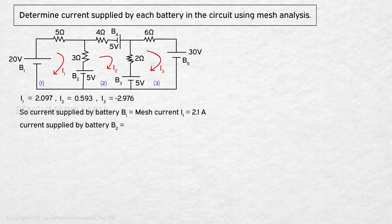Current supplied by battery B2 equal to difference of mesh current I1 and I2 since B2 is present between mesh 1 and mesh 2, which is equal to I1 minus I2 which is equal to 2.097 minus 0.593 which will give you 1.504 ampere.